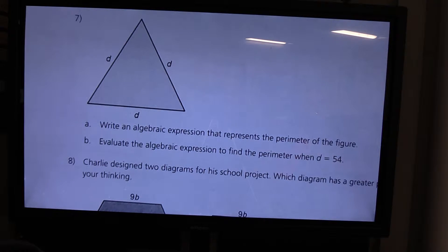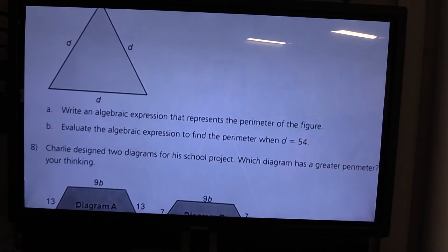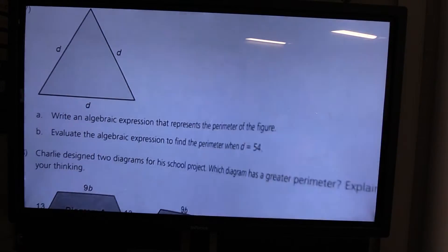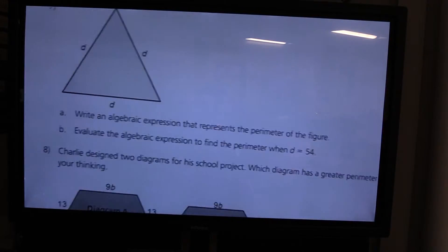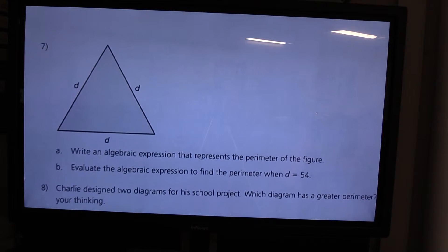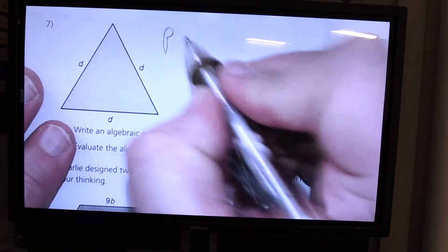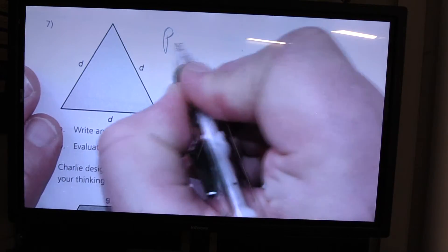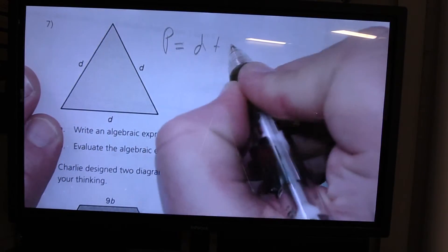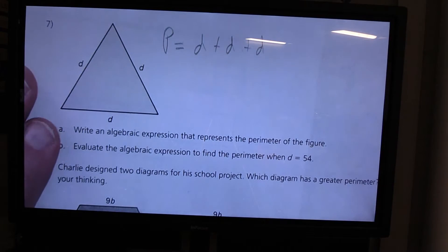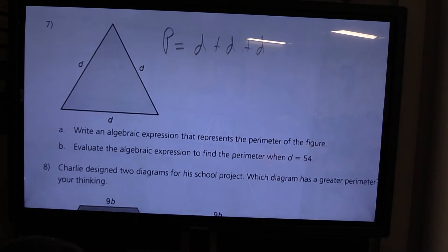So we have a triangle which has three sides. If I were using the generic formula for finding the perimeter of a triangle, I would say side plus side plus side. But here, since the value is D, I'm going to say capital P for perimeter equals D plus D plus D. That's how I would write an algebraic expression that represents the perimeter of that particular figure.